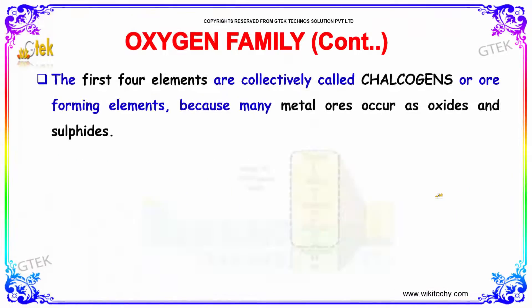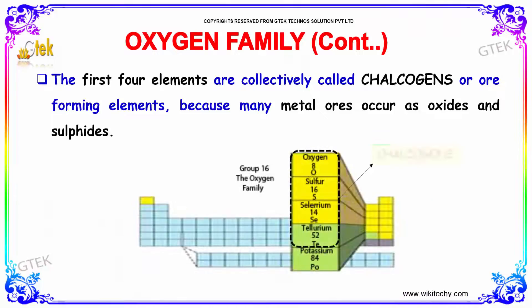The first four elements are collectively called Chalcogens, or ore-forming elements, because many metal ores occur as oxides and sulphides. These are called Chalcogens.